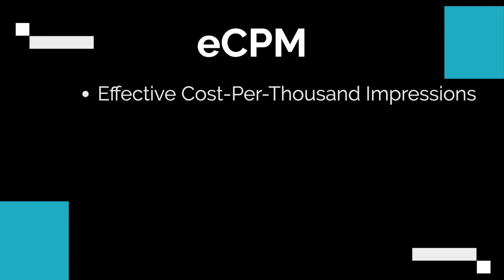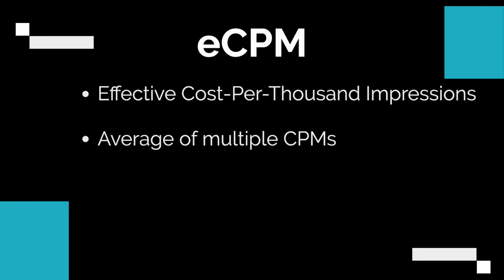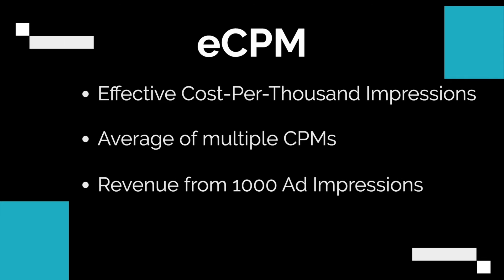Now let's continue with eCPM. eCPM refers to effective cost per thousand impressions. It's an average number of multiple CPMs. eCPM represents the revenue generated from thousand ad impressions.